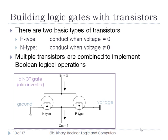If we switch this around and make the in-terminal one, then the P-type gate on the right closes and the N-type gate on the left opens. Current flows in on the in-terminal but flows out to ground rather than through the out-terminal, so the out-terminal is zero. Zero in means one out; one in means zero out. This is exactly as we expected from our Boolean inverter truth table.